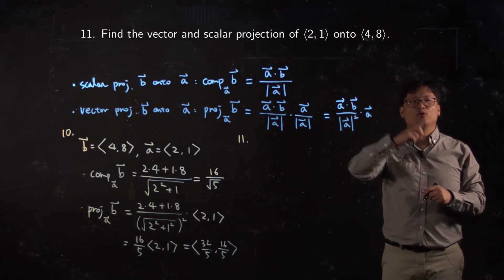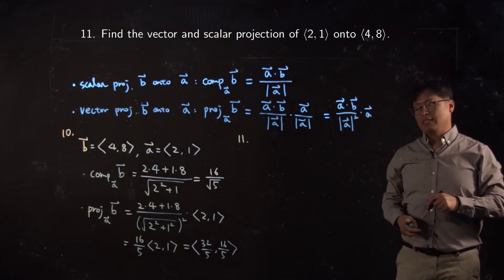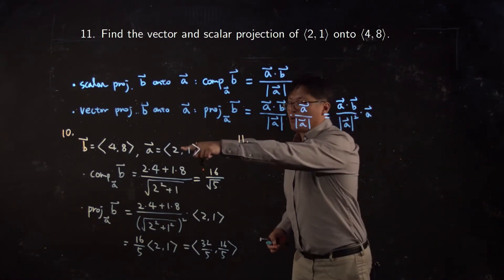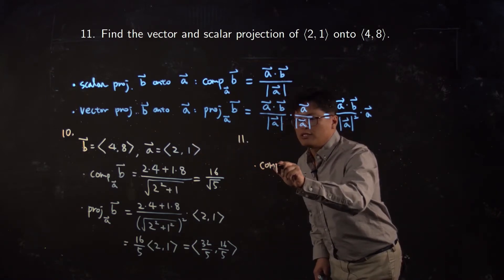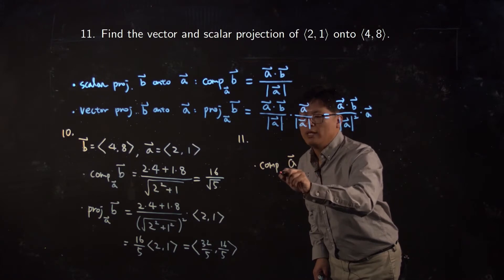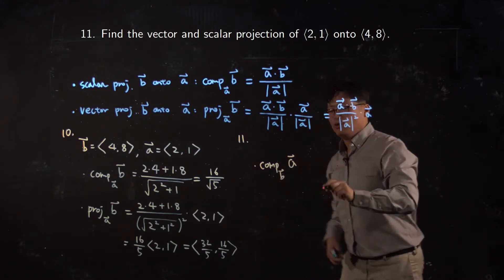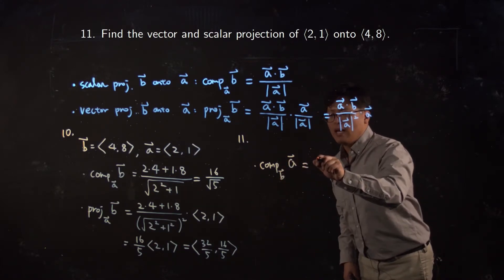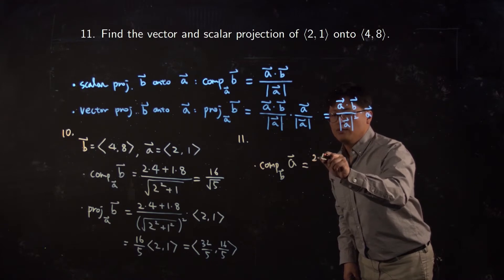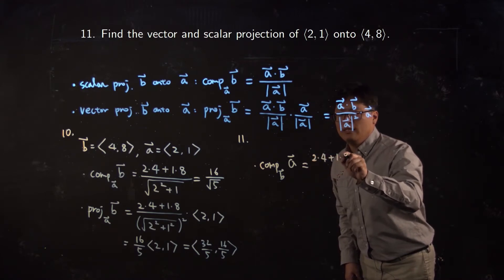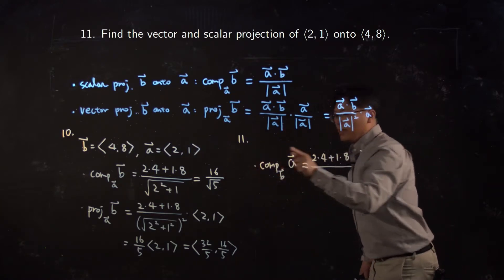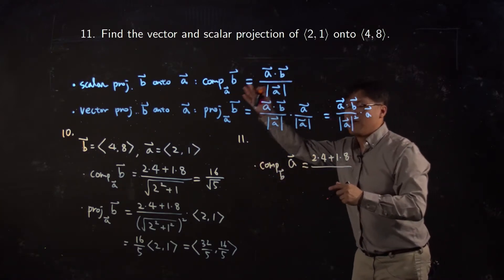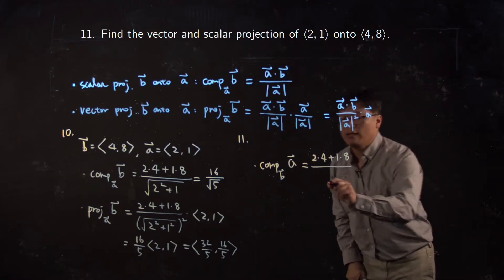which is opposite, right? Same vector, but in this case your scalar projection is a onto b. So that is equal to a dot b, which is the same: 2 times 4 plus 1 times 8. But keep in mind, your denominator is not the length of a but the length of b, because your vector a is projected onto b, which is the square root of 4 squared plus